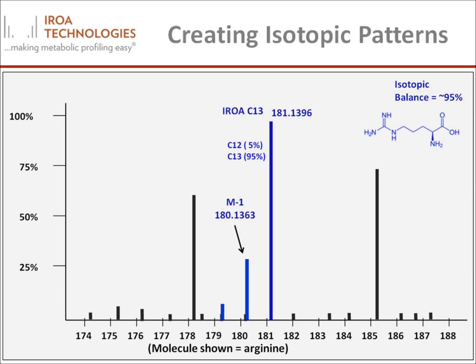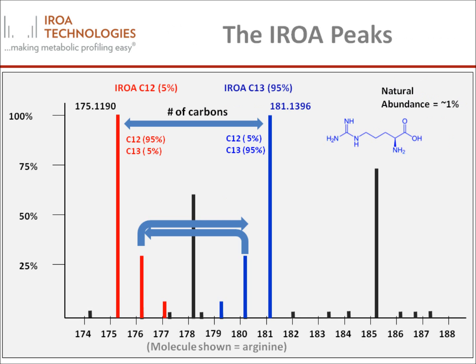Furthermore, if the C13 level is increased to 95%, the peak arrangement is now dramatically changed and the monoisotopic peak appears at 181. That peak is entirely C13 and has not an M plus 1, but rather an M minus 1 at 180. So, if we put these peaks all together, we can see that these three peak classes — natural abundance, 5%, and 95% — can be easily distinguished.